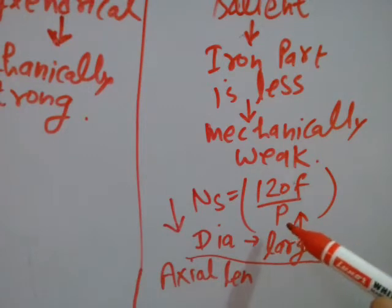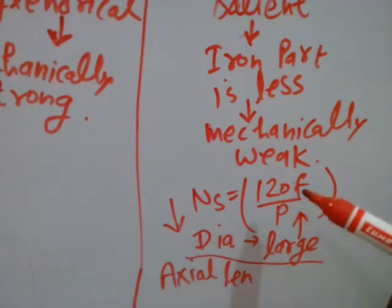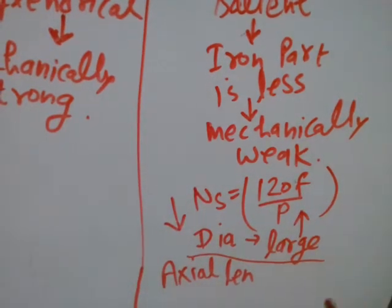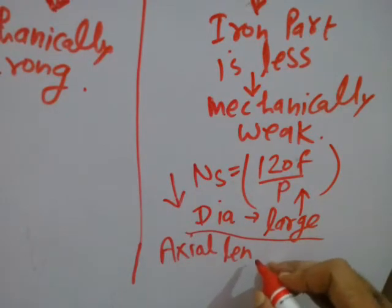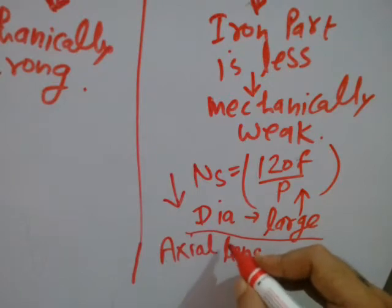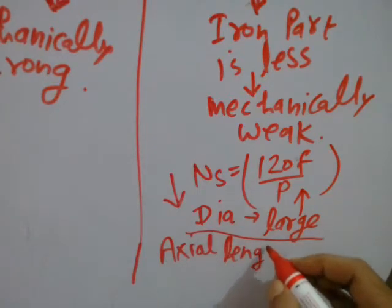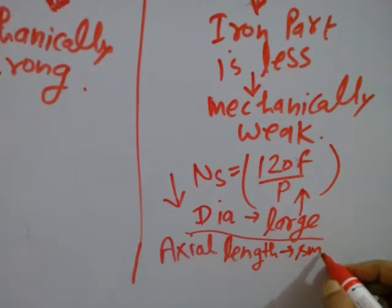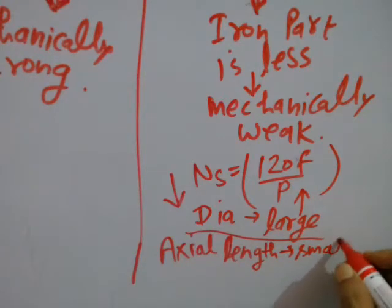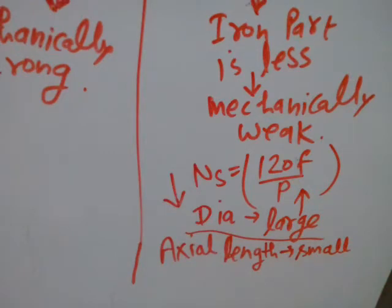If you want to fit a large number of poles on the periphery, then definitely the diameter will be large. If the diameter is large, that means the moment of inertia is large. To balance this large moment of inertia, the axial length must be small — as compared to the cylindrical rotor.